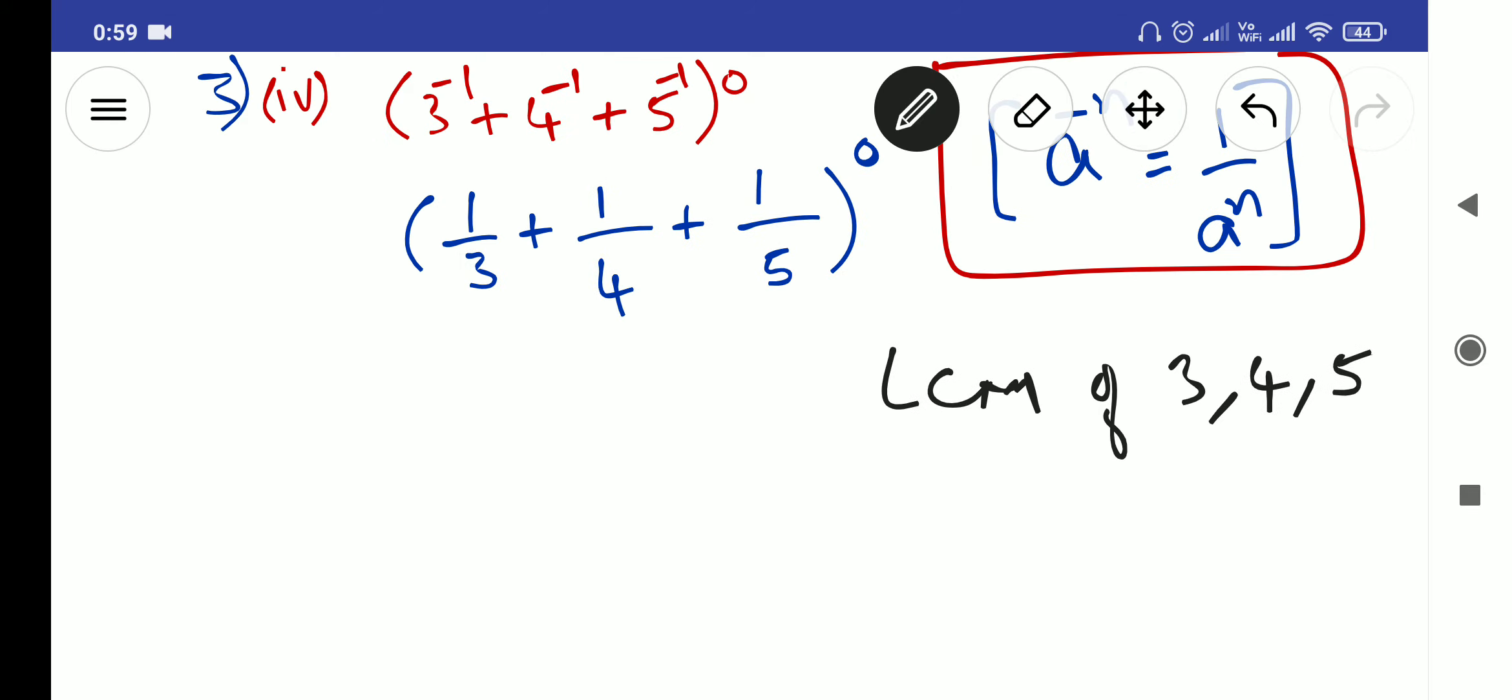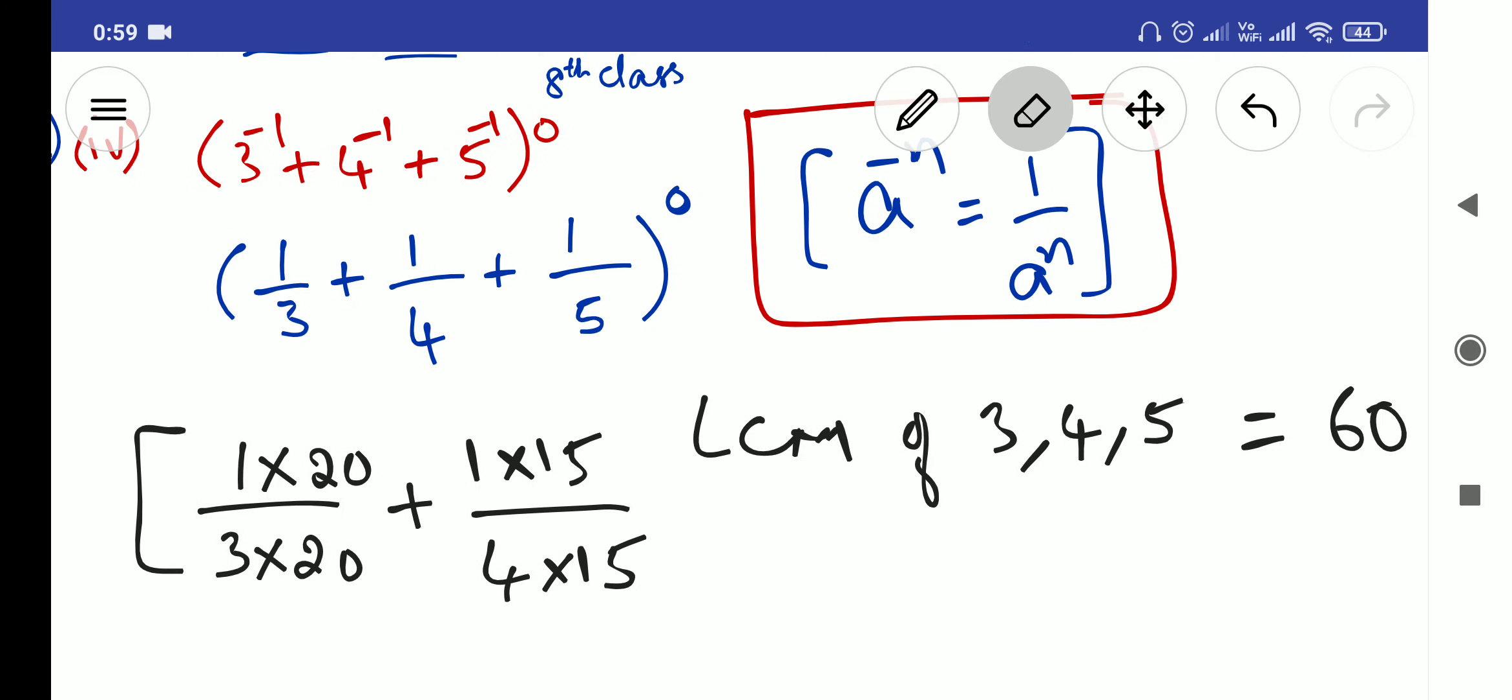So 1 into 20, then 4 into 15, so 1 into 15. Since I'm just rubbing, this LCM value we got, LCM is equal to 60.